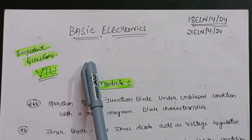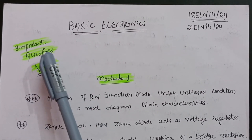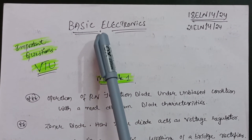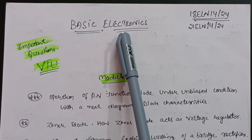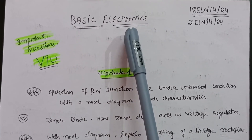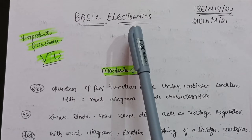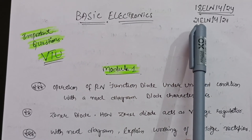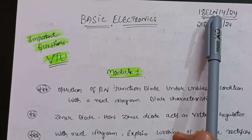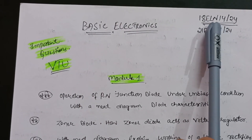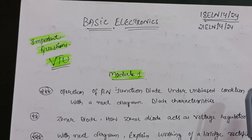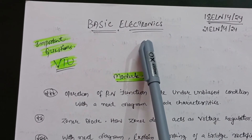Welcome back my dear friends. Today I will discuss some important questions about Basic Electronics, which is considered the toughest subject as far as the first or second semester is concerned. The subject code is 18ELN14, appearing as the fourth subject in either the first or second semester depending on your college.